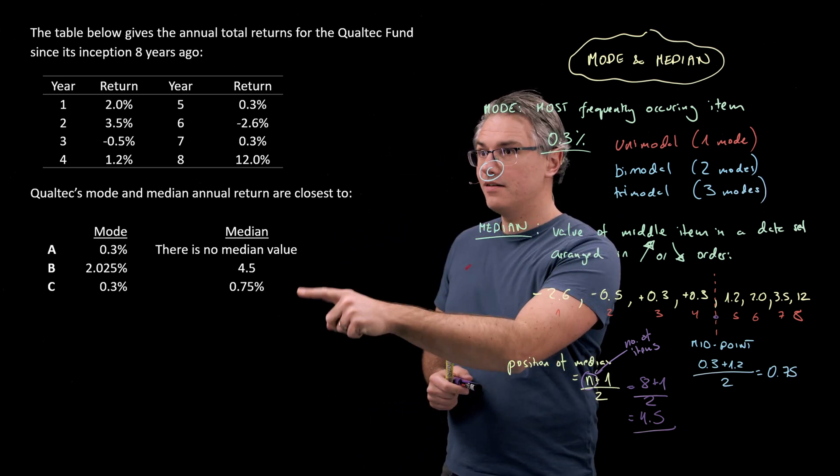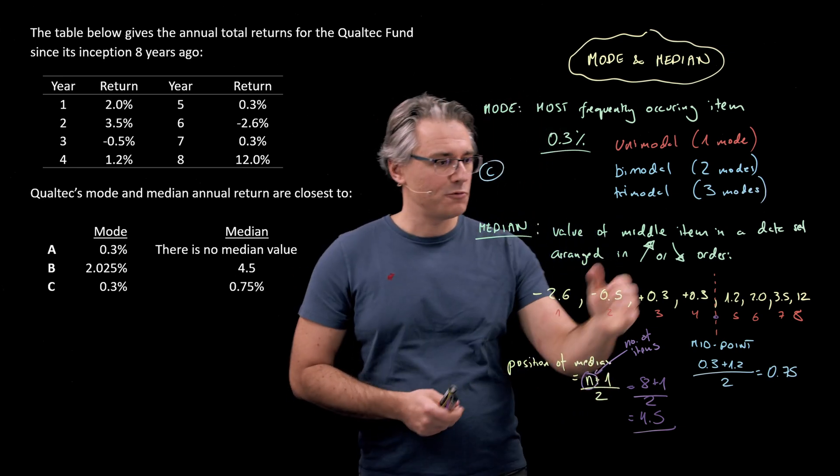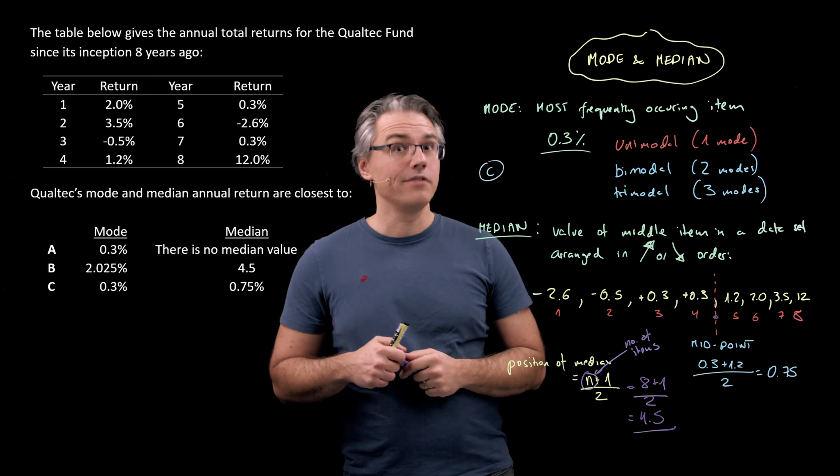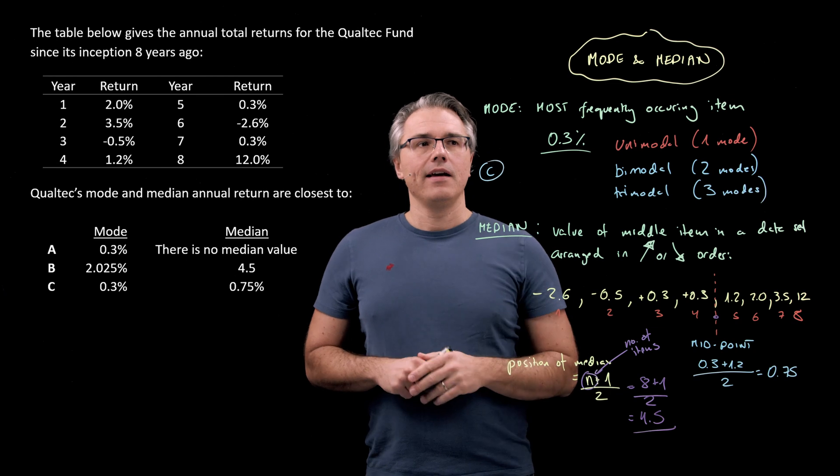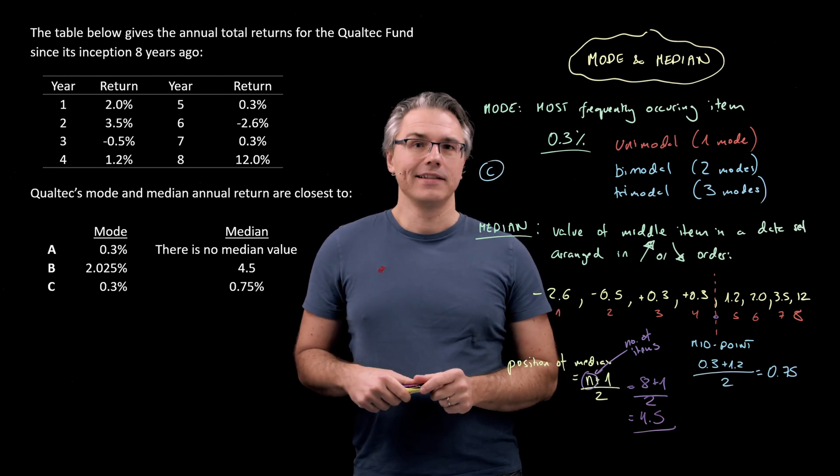However, that's not the answer. The median isn't 4.5. It's whatever lies in between item 4 and 5 when they are arranged in ascending or descending order. Answer C anyway, and that's the mode and median.